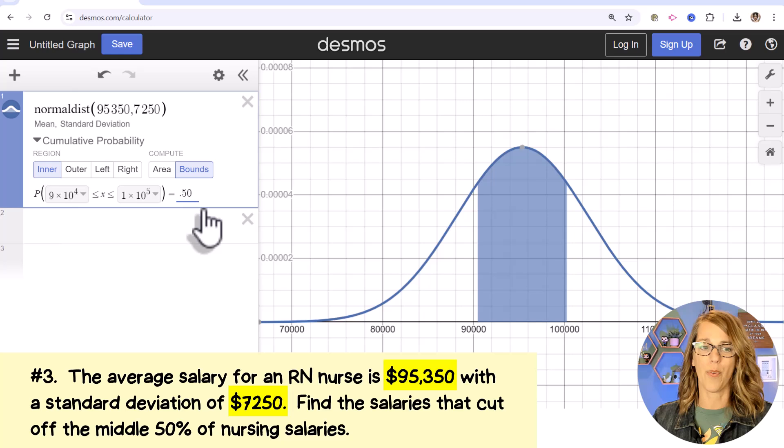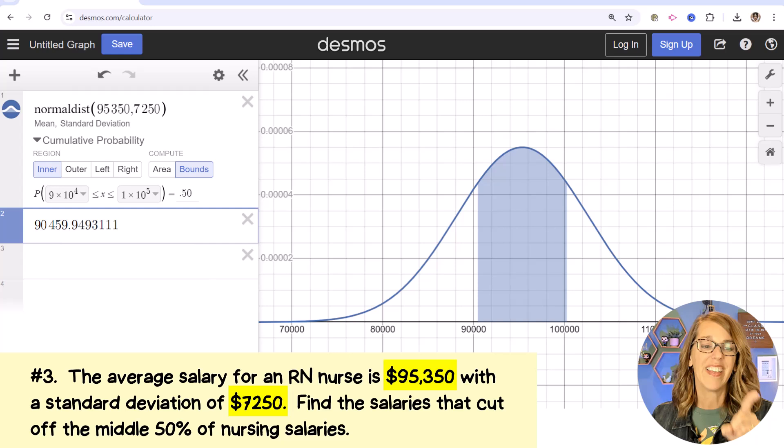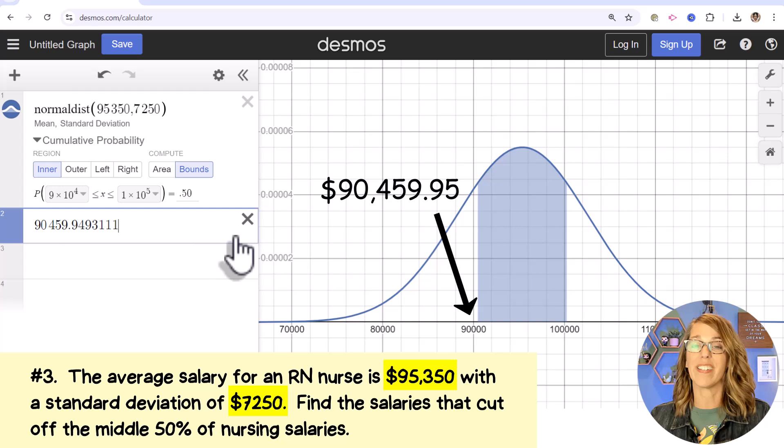The salaries that I'm given are in a really funky form, right? Nine times 10 to the fourth. Click that down arrow, and I'm actually going to copy it into an empty cell. That's my salary. So 90,459. And if I round it, 95 cents.